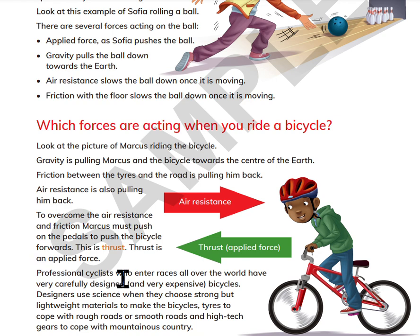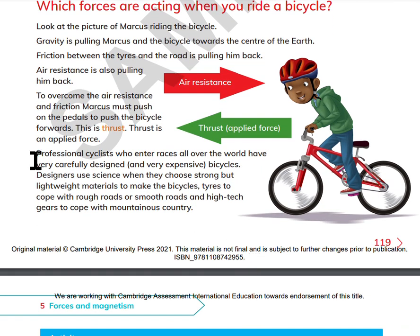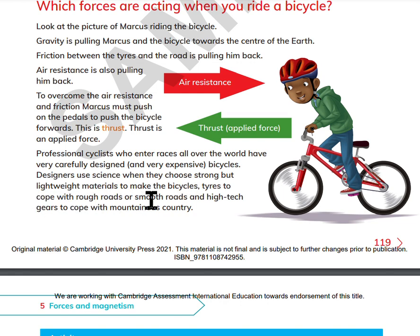Professional cyclists who enter races all over the world have very carefully designed and very expensive bicycles. Designers use science when they choose strong but lightweight materials to build bicycles, with tires to cope with rough roads or smooth roads, and high-tech gears to cope with mountainous country.